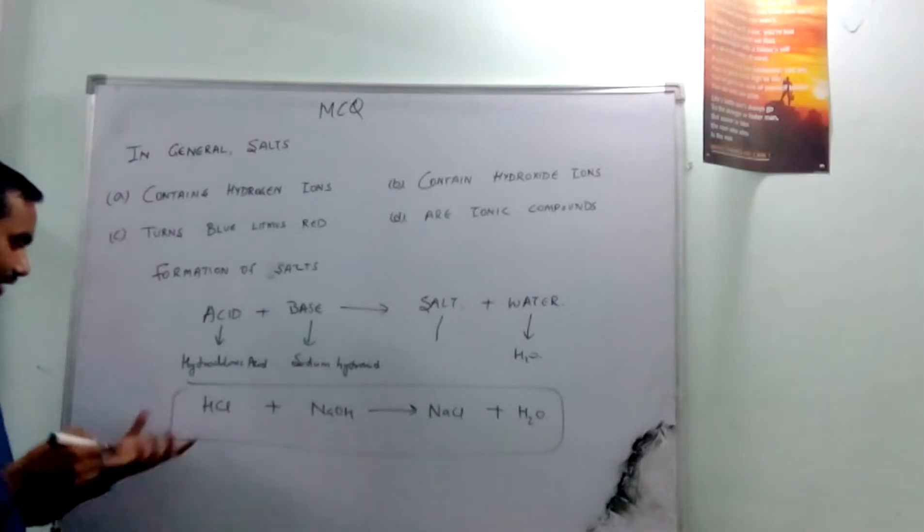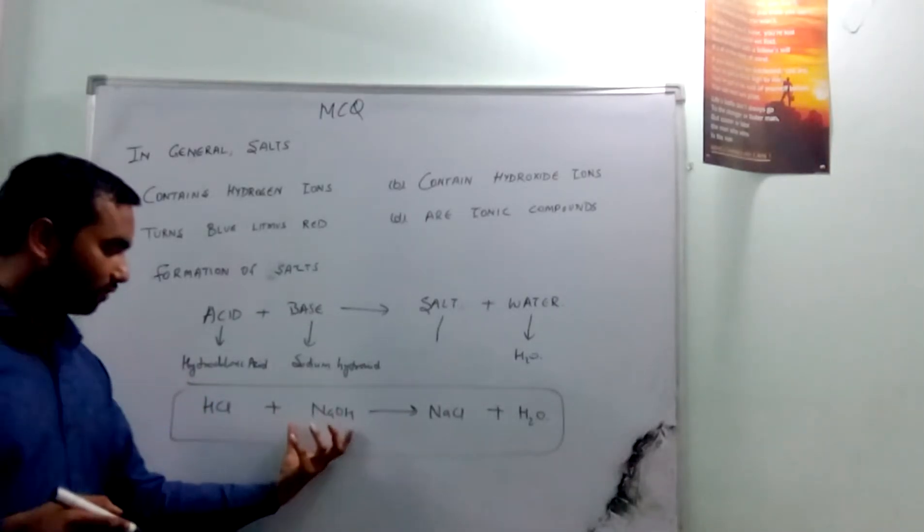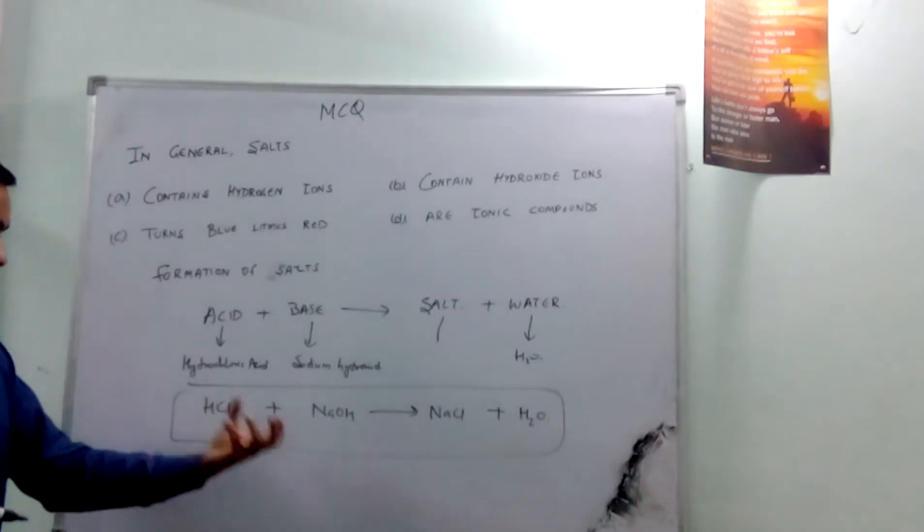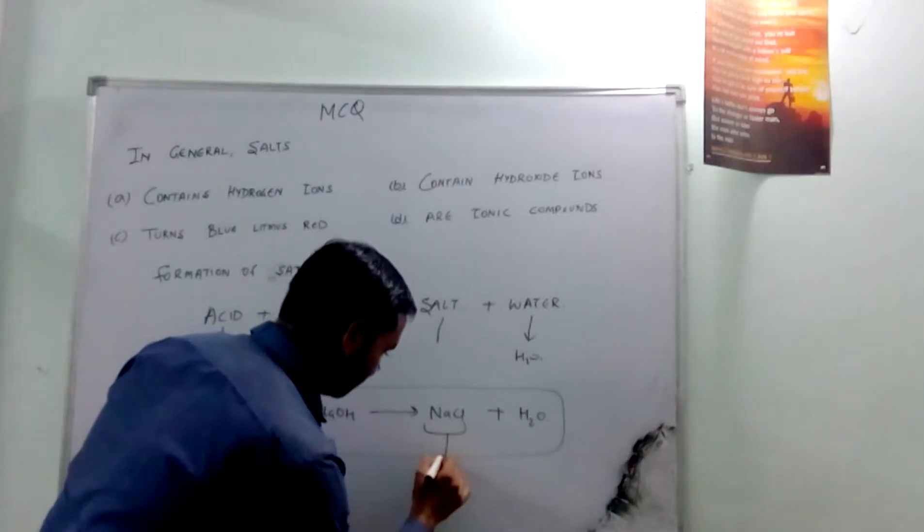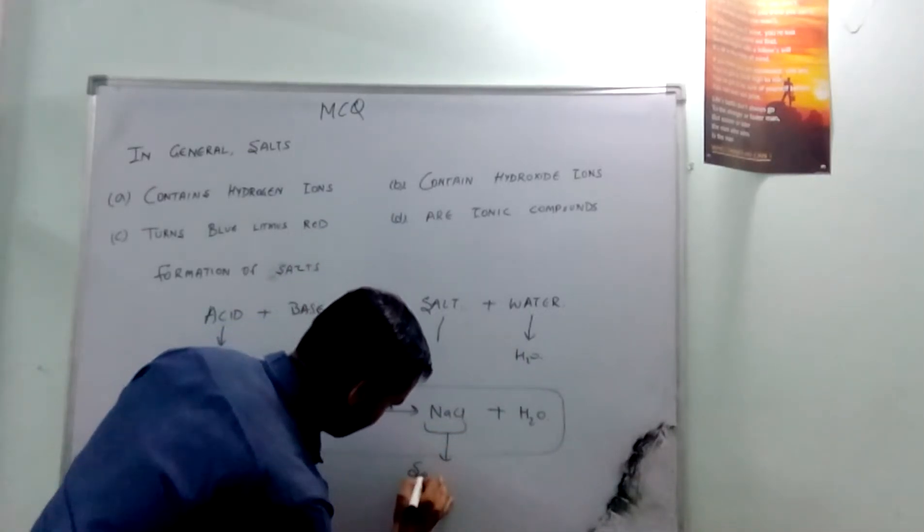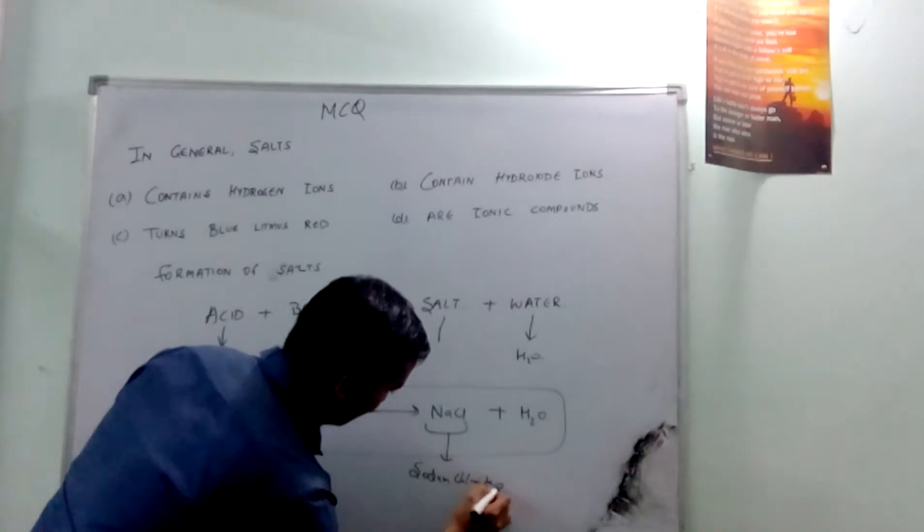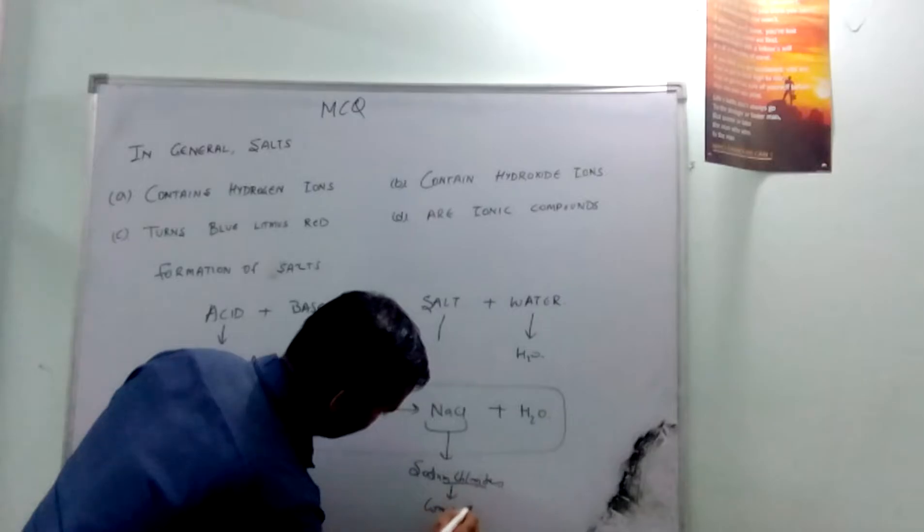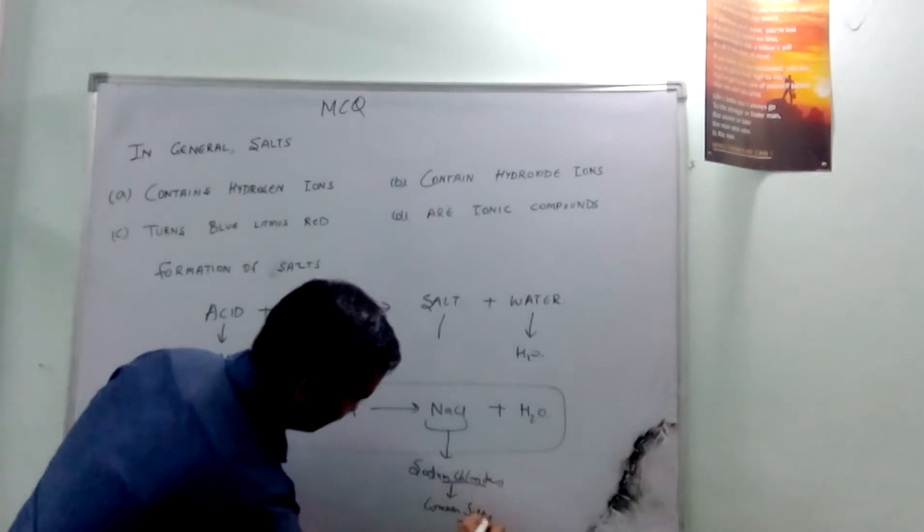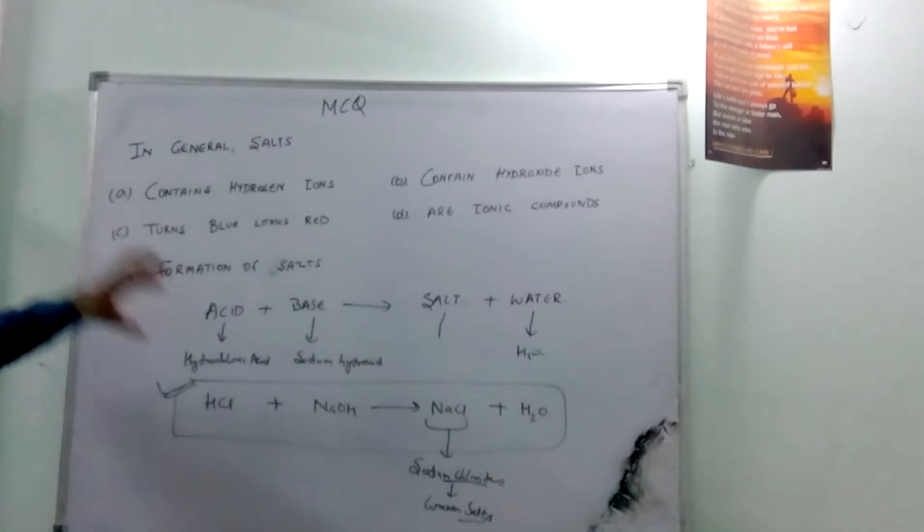Example where hydrochloric acid, we know that it's a commonly used mineral acid, and sodium hydroxide, it is the most common hydroxide present in base. And NaCl, the output sodium chloride, which we consume every day, it is called common salt. You all know this, okay?